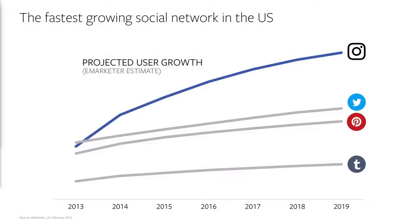According to eMarketer, Instagram is the fastest growing social network in the U.S., and their projections over the next five years show Instagram growing its leadership aggressively. Instagram is growing at a much faster rate than Twitter and Pinterest. People spend more time on our platform on mobile than they do on Snapchat, Twitter, Pinterest, Yahoo, or Pandora. Instagram is a mobile leader — it is where customers are spending a lot of time discovering new products, services, and apps, and it should be an integral part of your media mix.